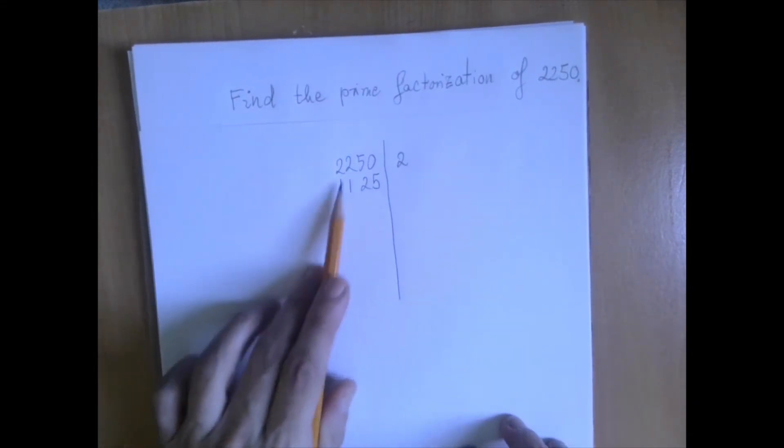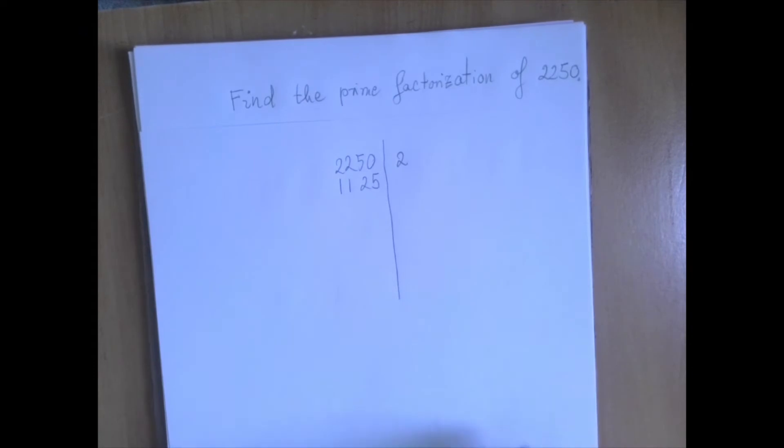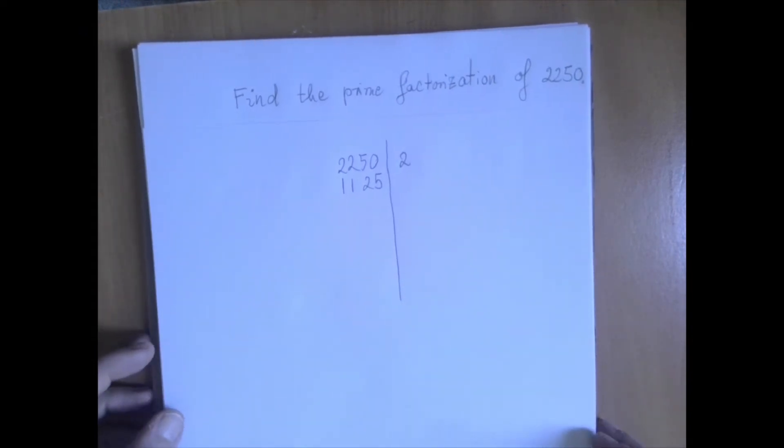Let's ask again, is this number divisible by 2? The answer is no. The last digit is not even. Then we roll up to the next prime number, which is 3.